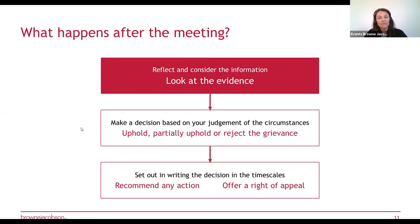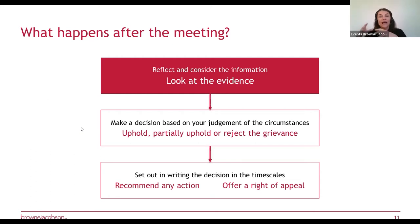Offer a right of appeal. If you've upheld the grievance, the requirement to appeal isn't there, but if you've partially upheld or rejected it, the employee should have a right of appeal against your decision. That will go to somebody else — probably someone impartial who hasn't been involved, usually a more senior person, and it could even go to a panel.